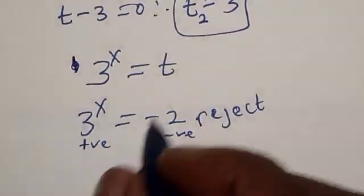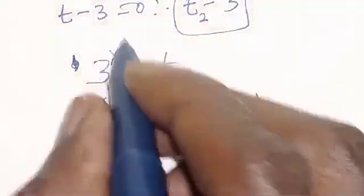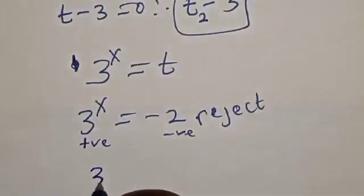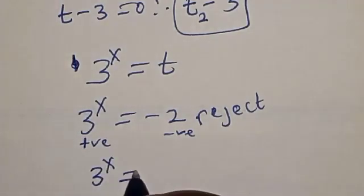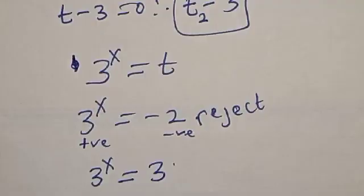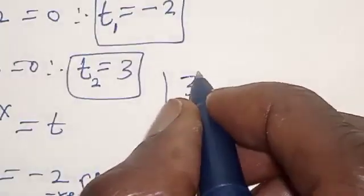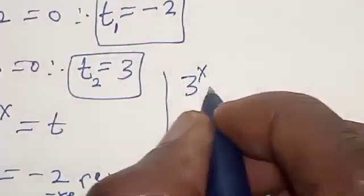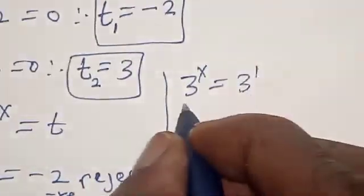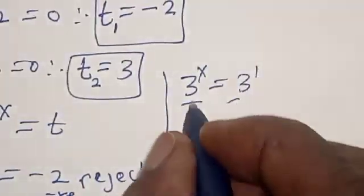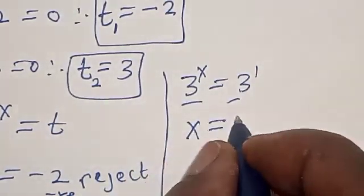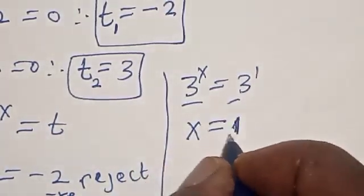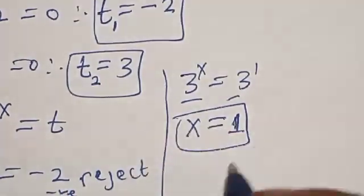Now let's check the other solution. 3 raised to power x equals 3, which equals 3 raised to power 1. They have the same base. Therefore x equals 1. That is the real value of x.